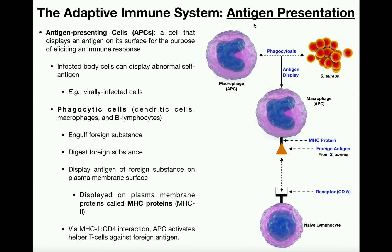It suffices to say for now that if we have an invading pathogen — something that could cause disease, something perceived as foreign by our bodies, such as this bacterium Staphylococcus aureus — we would want to mount an immune response. We first need to get an antigen from Staphylococcus aureus and present it to the appropriate cell type.